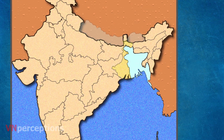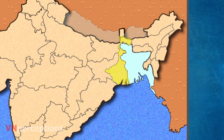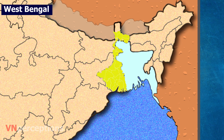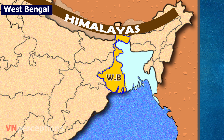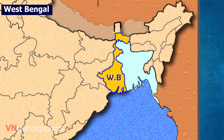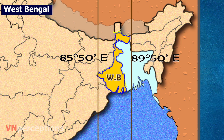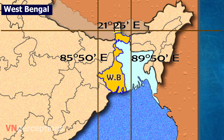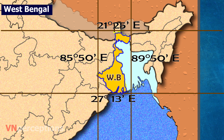In this video, we shall learn the physiographic divisions of West Bengal. West Bengal is a state in the eastern part of India. It stretches from the Himalayas in the north to the Bay of Bengal in the south. It lies between 85 degrees 50 minutes and 89 degrees 50 minutes east longitudes, and 21 degrees 25 minutes and 27 degrees 13 minutes north latitudes.